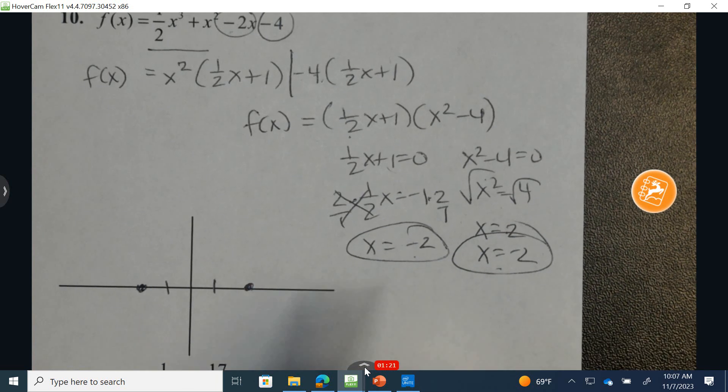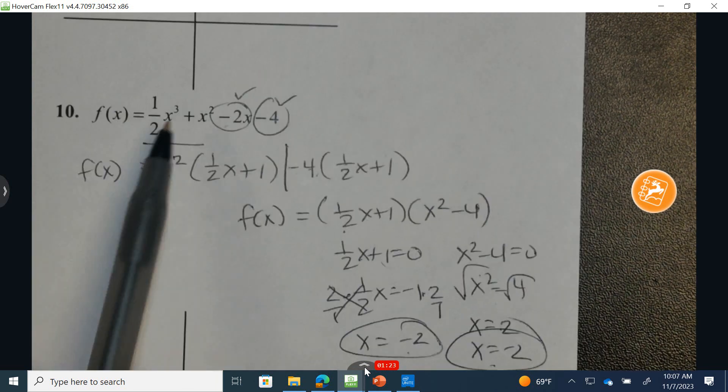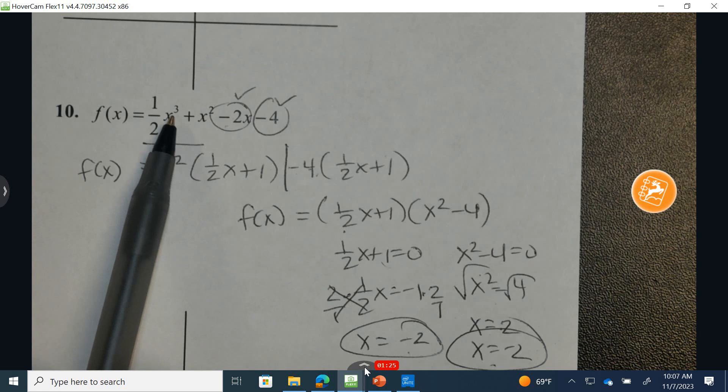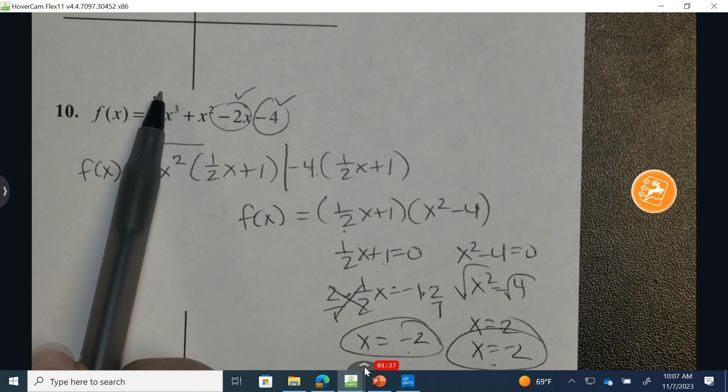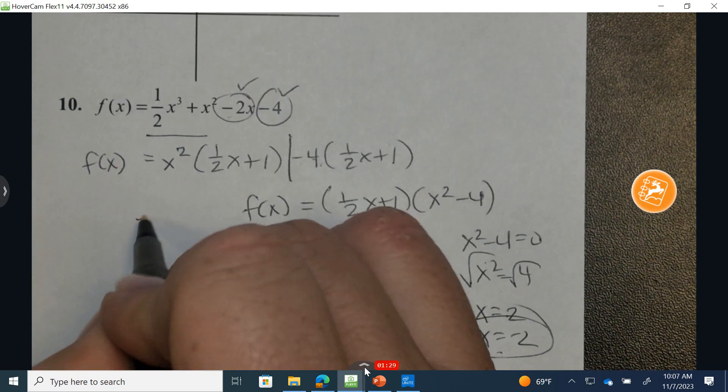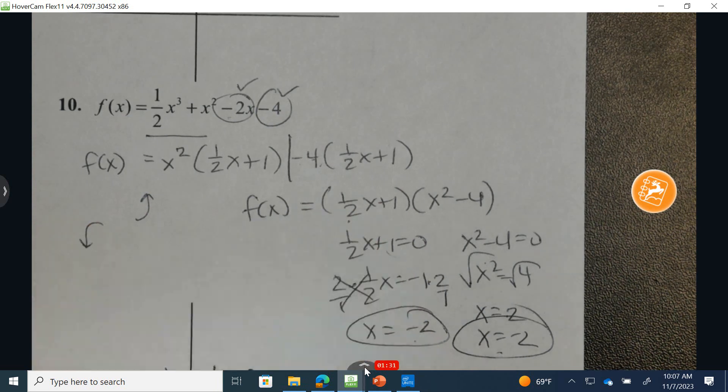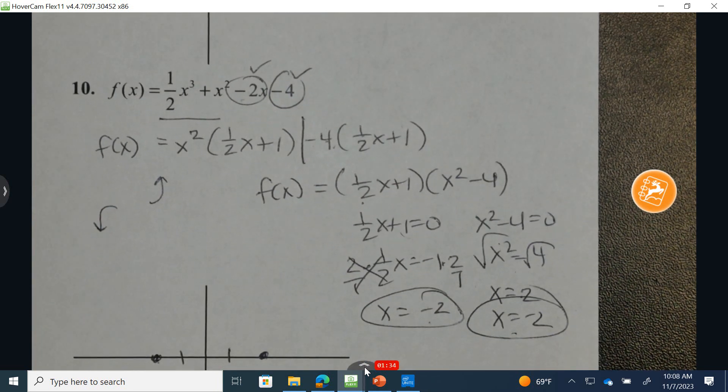So here's x equals 2, and I have a double at negative 2. Now this function is odd degree with a leading coefficient that's positive. That means it's going to be up on the right and down on the left.